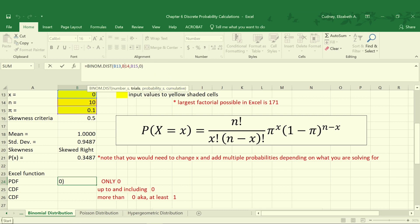So when we do the Excel function we get the same calculation, the same number that we did when we did the long calculation using our factorials. So the probability of only 0 defects is 34.87%.